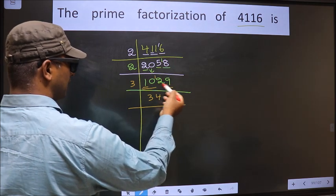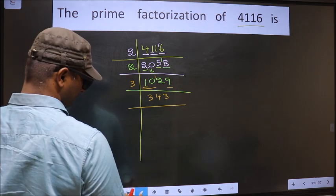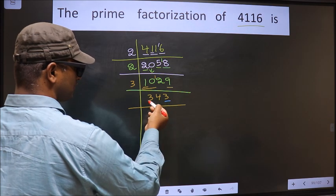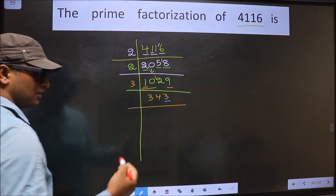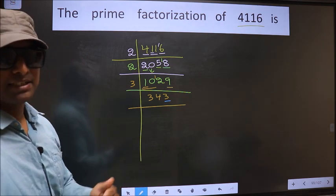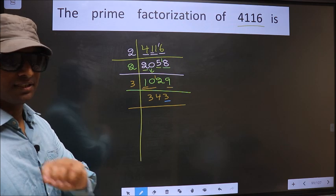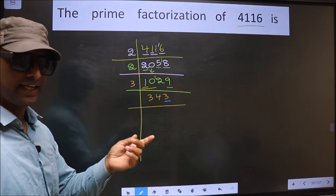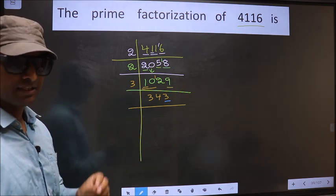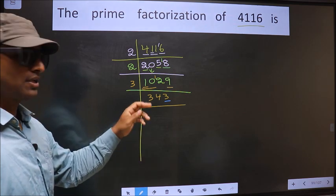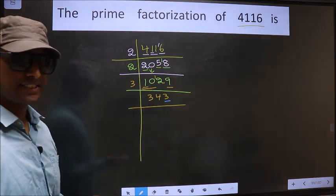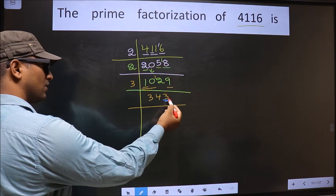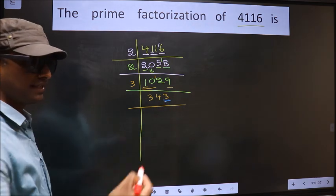Next, number 9. When do we get 9 in the 3 table? 3 times 3 is 9. Now for this number, the last digit is 3, which is not even, so this number is not divisible by 2. To check divisibility by 3, we add the digits: 3 plus 4 plus 3, we get 10. Is 10 divisible by 3? No. So this number is not divisible by 3. Next, prime number 5. For this number, the last digit is neither 0 nor 5, so this number is not divisible by 5.